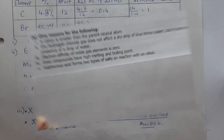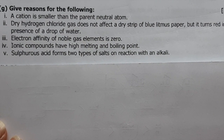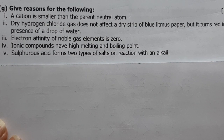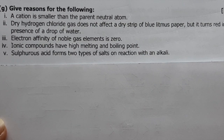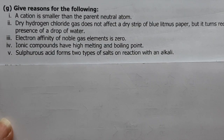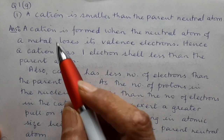Question 1g: Give reasons. (1) The cation is smaller than the parent neutral atom. (2) Dry HCl gas does not affect a dry strip of blue litmus paper but turns it red in the presence of water. (3) Electron affinity of noble gas elements is zero. (4) Ionic compounds have high melting and boiling points. (5) Sulfurous acid forms two types of salts on reaction with an alkali.